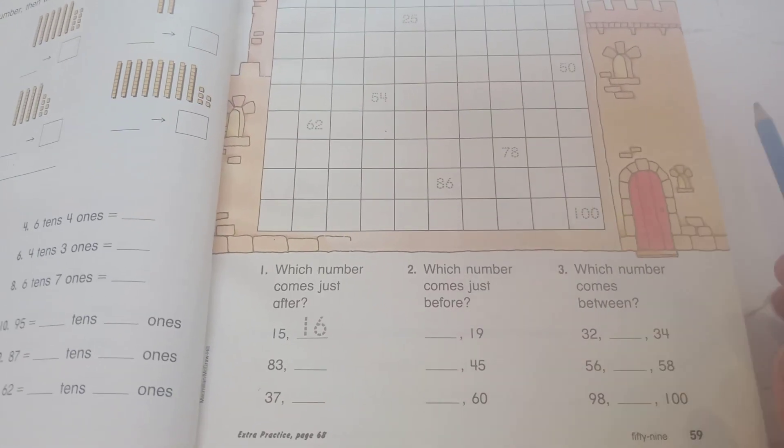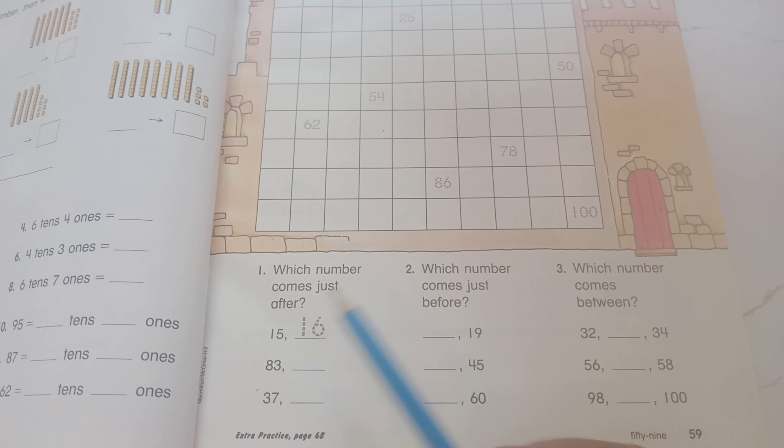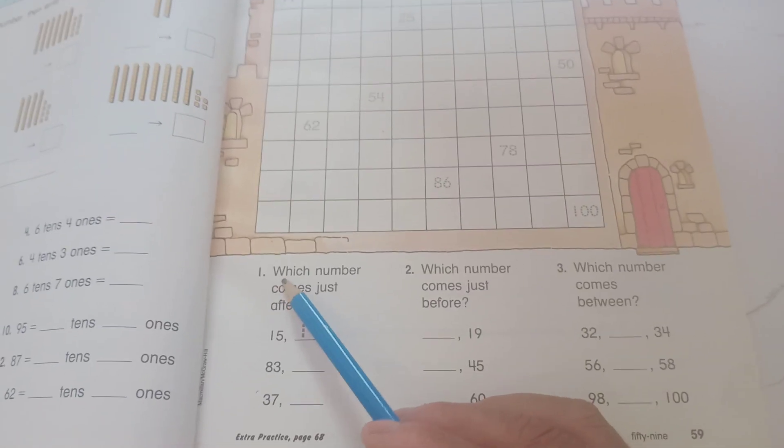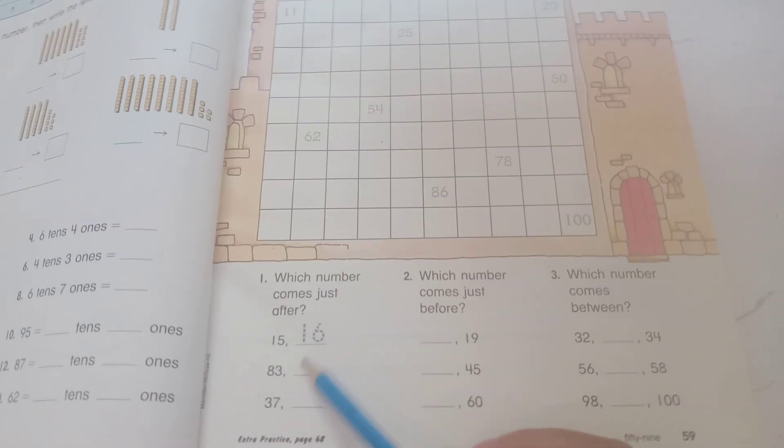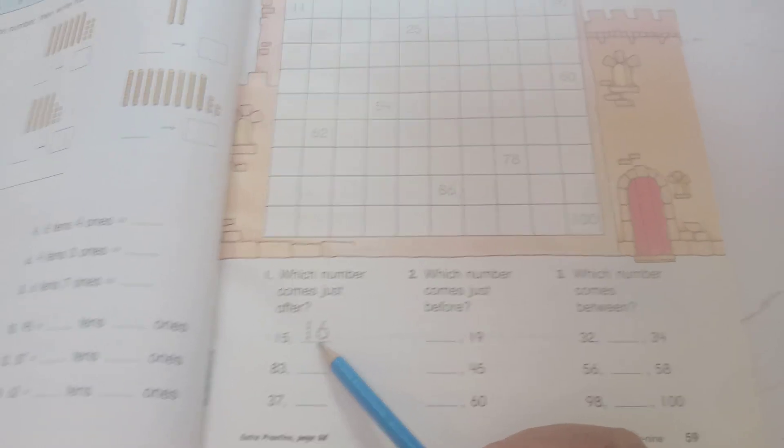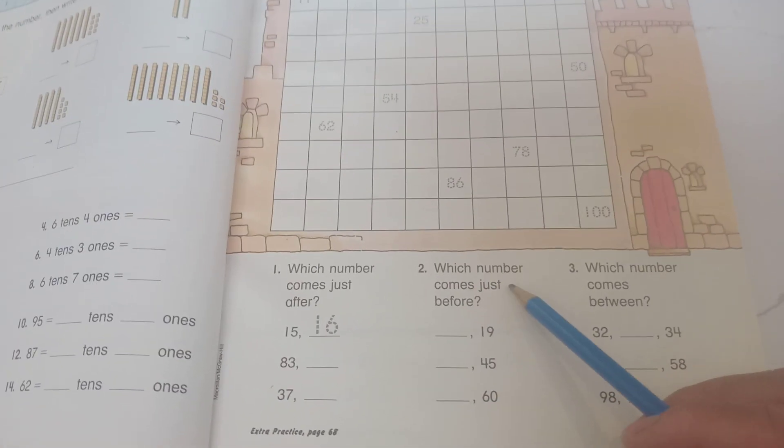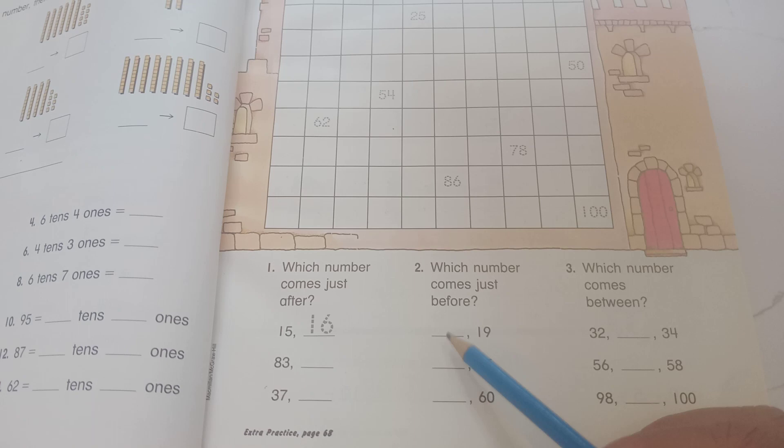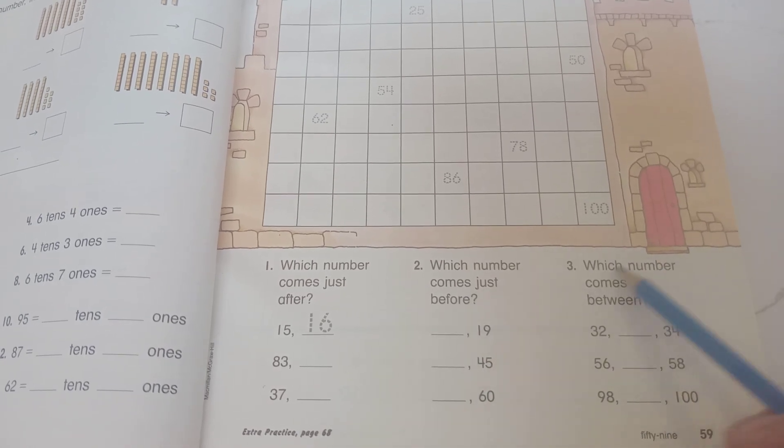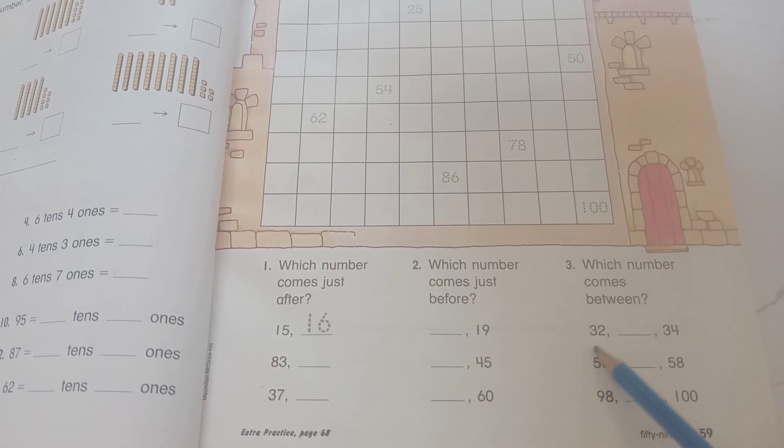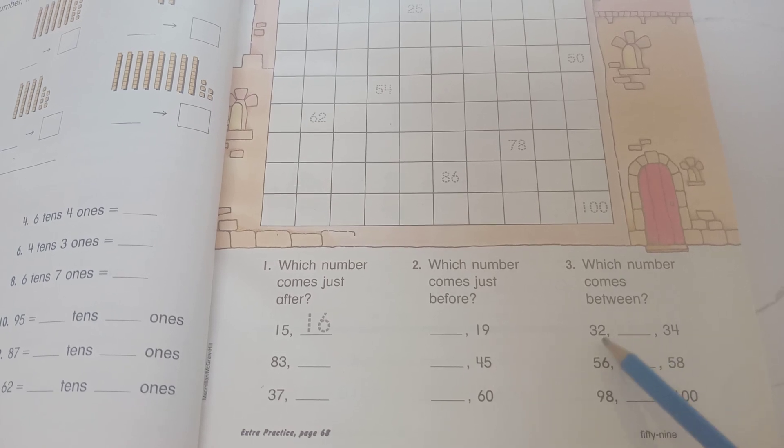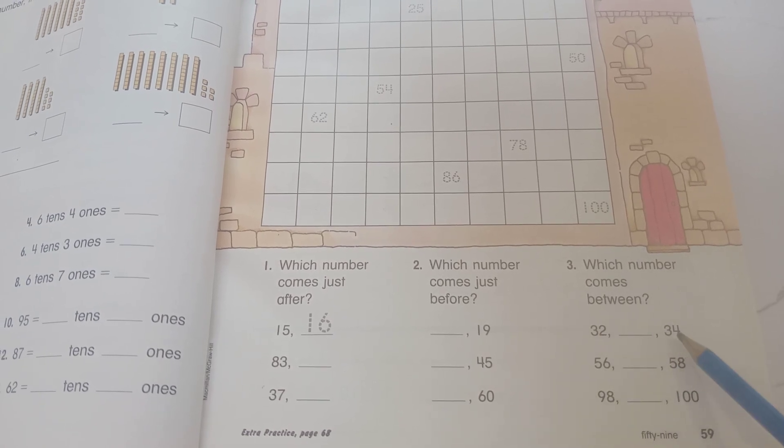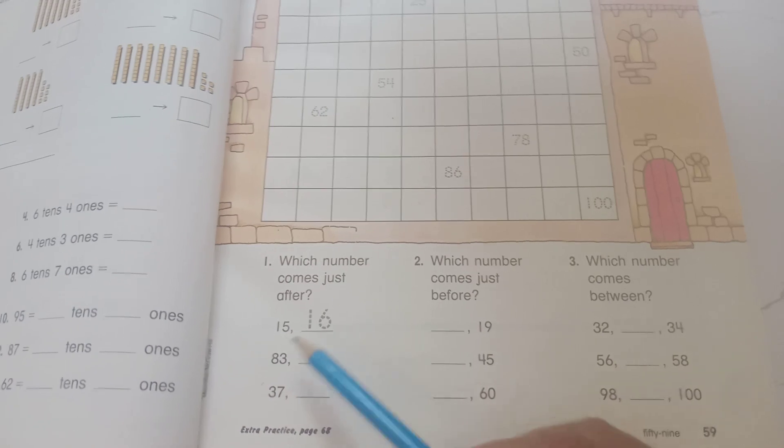So now you can see altogether. Number 1: Which number comes just after 16? So 16 is 17, right. Number 2: Which number comes just before 19? 18. Okay, so now which number comes between, in the middle, 32 and 34? 33.